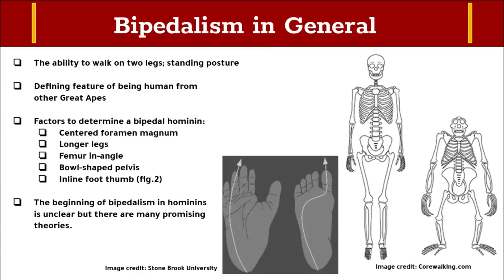Bipedalism is the defining feature of us humans — it separates our species from the other great apes. The ability of bipedalism, though, requires many skeletal factors. We can use a set of anatomical markers to determine if a species of hominin is bipedal. First and foremost is the foramen magnum. The positioning of this hole can indicate if the hominin stands upright. In humans, the foramen magnum is positioned in the center and directly downwards of the skull, which allows the human body to stand vertically. For quadrupedalism and more arboreal behaviors, the foramen magnum is located on the back of the skull, allowing knuckle-walking creatures to look straight ahead when on all fours.